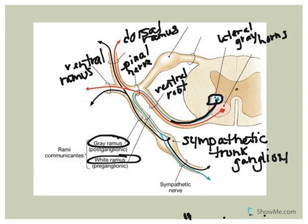The gray ramus communicans is associated with every spinal nerve - it's located all along the segments of the spinal cord. The reason for this is it's used to distribute the axons to structures in the body walls and the limbs.